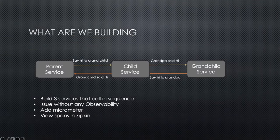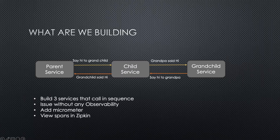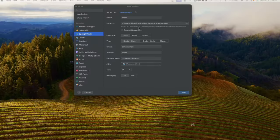Let's understand what we are going to build in this project. We are going to build three services: a parent service, a child service, and a grandchild service. The parent service will pass a message to the child service to say hi to the grandchild, the child will pass it on, and the grandchild will respond back. After building these services, we'll integrate Micrometer and use the Zipkin dashboard to understand trace IDs and span IDs.